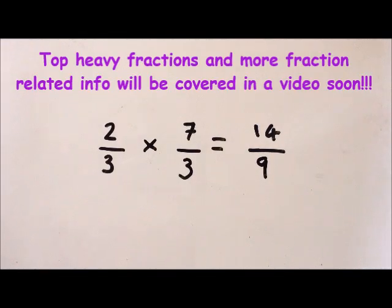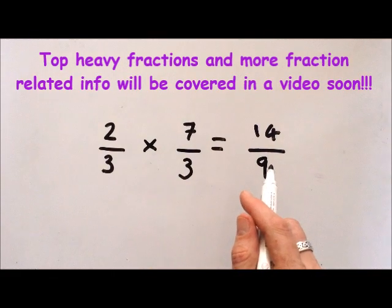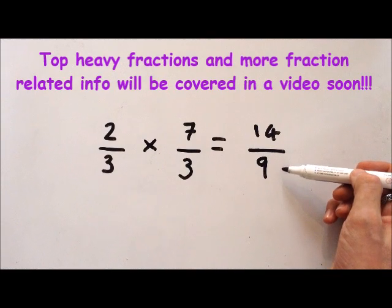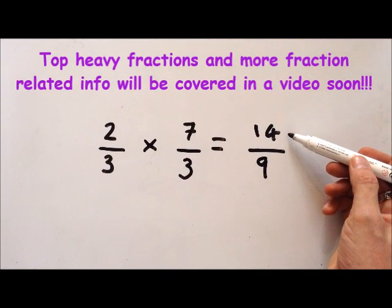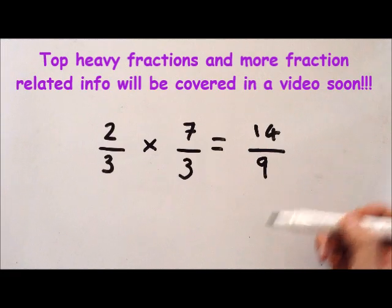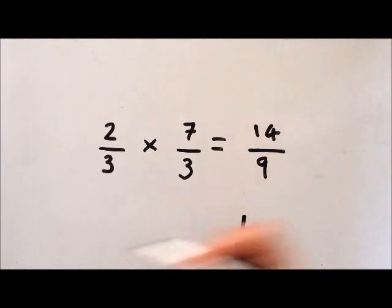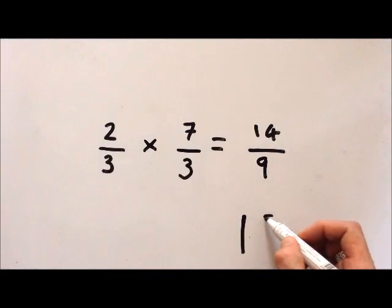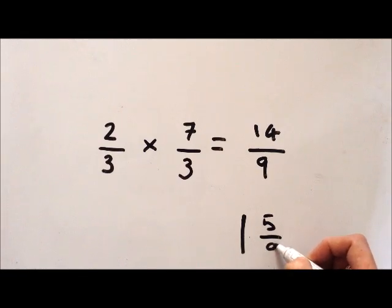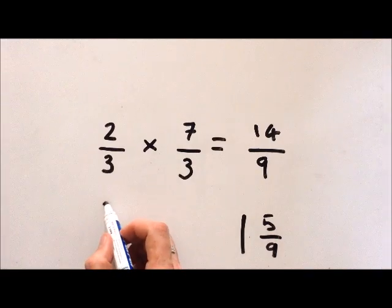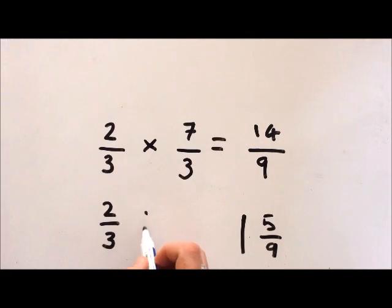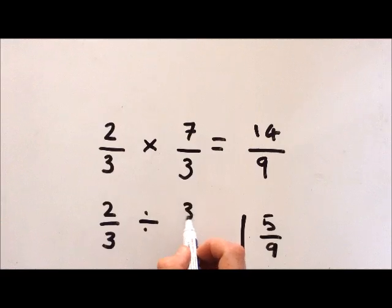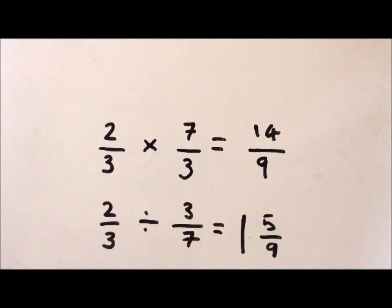Now what we've got here is a top-heavy fraction, so what we have to do is reduce this fraction down. We find out how many 9s we can get out of 14 — we can get one 9 with a remainder of 5. So our answer will be 1 whole and 5 ninths. So 2 thirds divided by 3 sevenths equals 1 and 5 ninths.